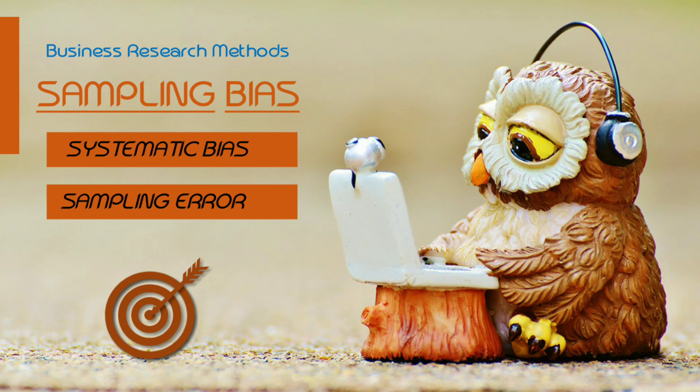We discuss some of the problems we get into with sampling bias. We discuss how there are some errors. There are two types: there is a systematic bias and there is a sampling error. We will ask questions about the systematic bias and the sampling error.